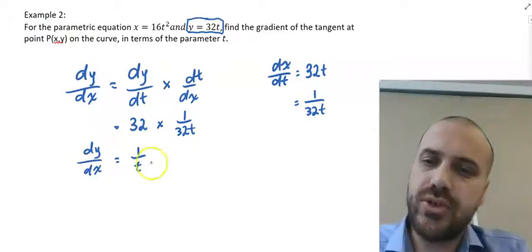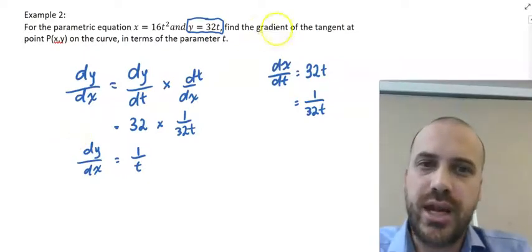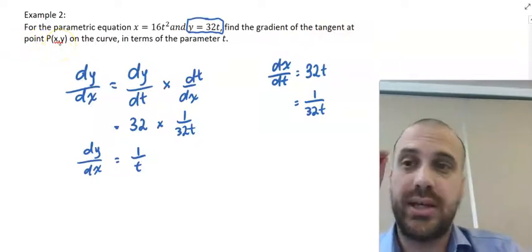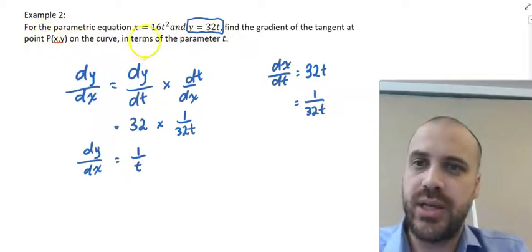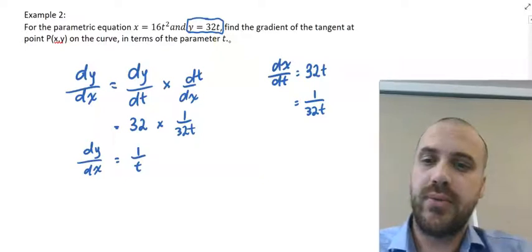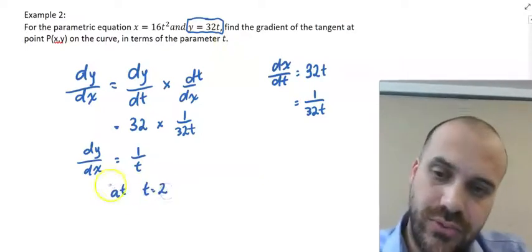Now, you can use this because if I say, find the gradient of the tangent at point, and I give you a specific parameter at point p, x, y, in terms of the parameter t, when t equals 2, we can say that at t equals 2, for example.